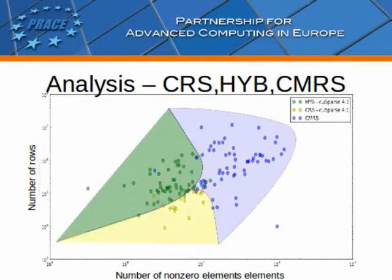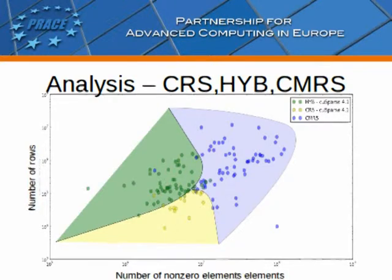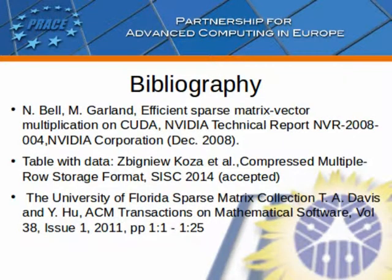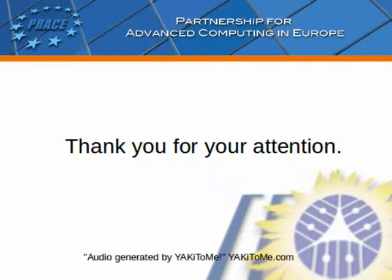It is clearly visible that the colors of the points representing SPMV methods separate from each other. Although this is not a universal rule, it can be very helpful in determining which method can be used best for multiplying matrices arising in a particular scientific problem. Thank you for your attention.